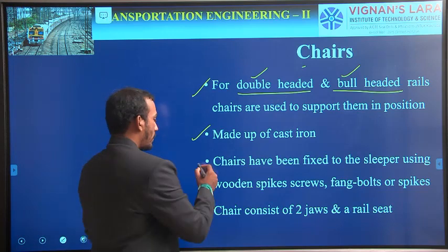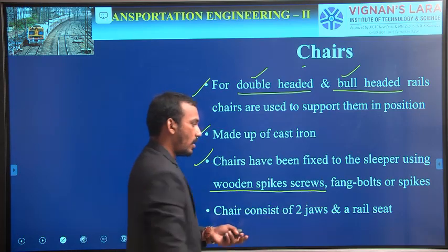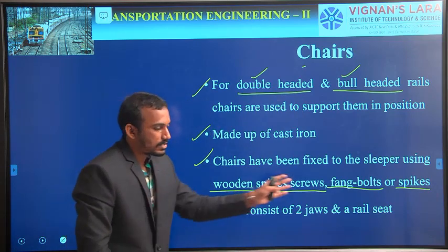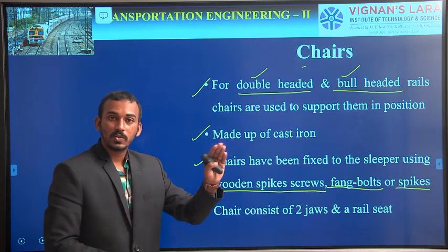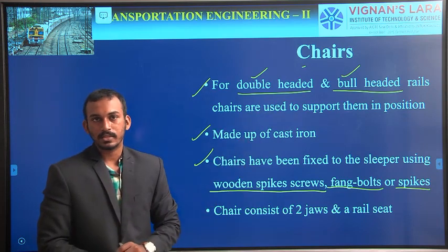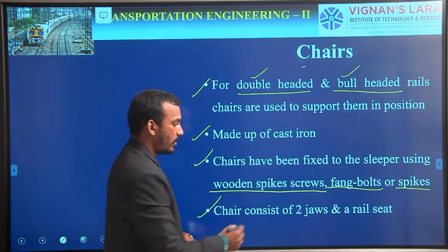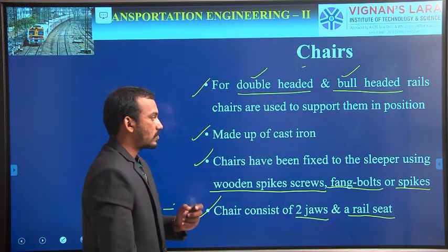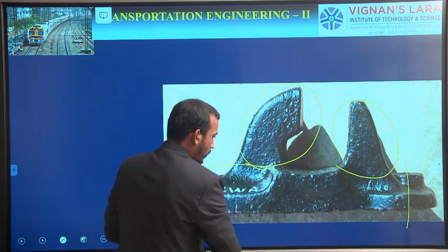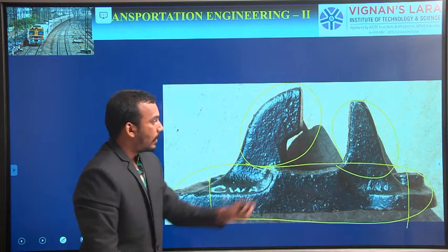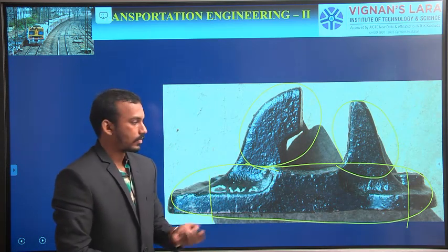Chairs have been fixed to the sleepers using wooden spikes, screws, fang bolts, or spikes. These three arrangements can be used to connect the chairs to the sleepers — in spikes, we use rounded spikes. Rounded spikes are used to connect chairs of bull-headed rails to the sleepers. Chairs consist of two jaws and a rail seat. Between the two jaws, we place the rails, and the rail seat is used to connect it to the sleepers.